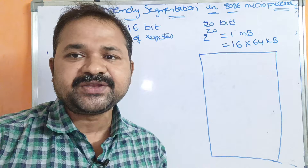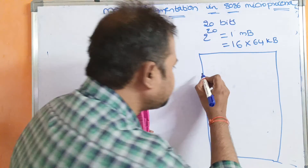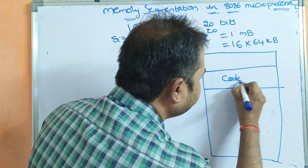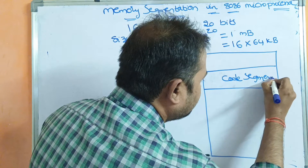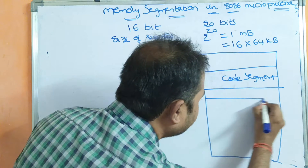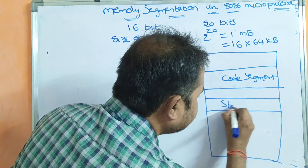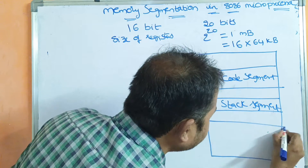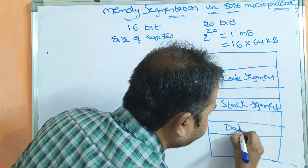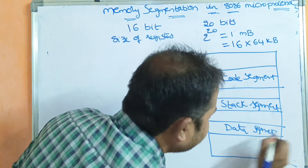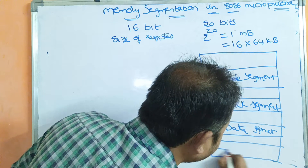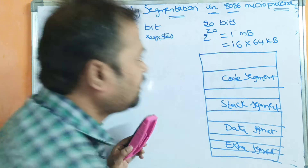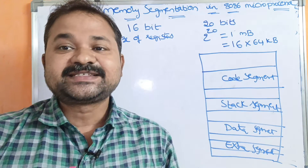Here, we can divide the main memory into only 4 segments. The first segment is called the Code Segment. The next segment is the Stack Segment. The third is the Data Segment, and the fourth segment is the Extra Segment. So here we have divided the main memory into 4 parts. Likewise, we can divide the main memory into 16 segments.